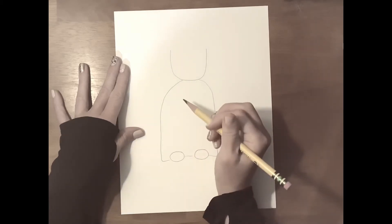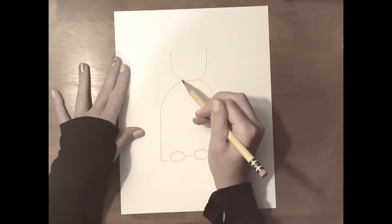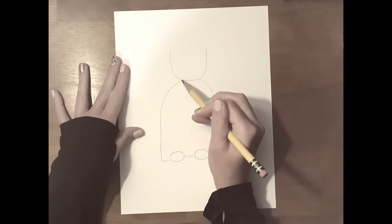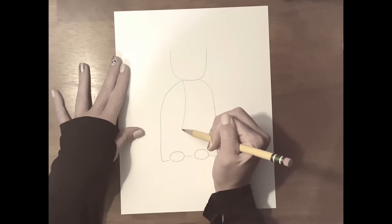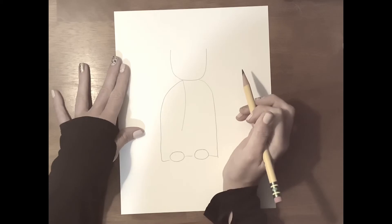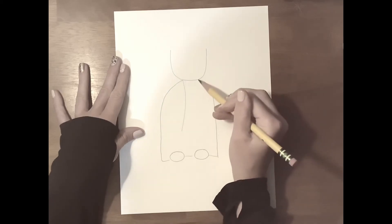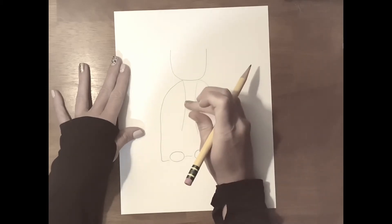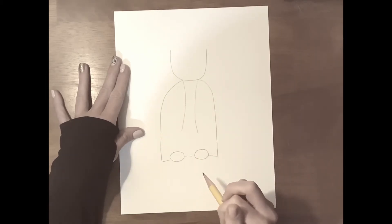Now, you come up here where this line for her body meets the line for the face, and you draw a little curvy line down like that. And do the same thing on the other side. You do not want them to touch in the middle. You want a little space there.